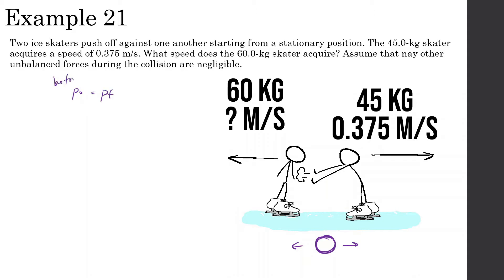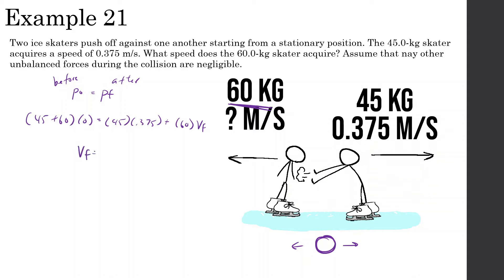This is things before the explosion and after. We know for both the 45kg skater and the 60kg skater, at the very beginning they're stationary — they're not moving. Afterwards, the 45kg skater goes 0.375 meters per second to the right, and the 60kg skater — we don't know what his velocity is. We should know since he is heavier, he won't have as much velocity. So: 45 times 0.375 divided by 60, and we get 0.28 meters per second — or negative 0.28 meters per second.